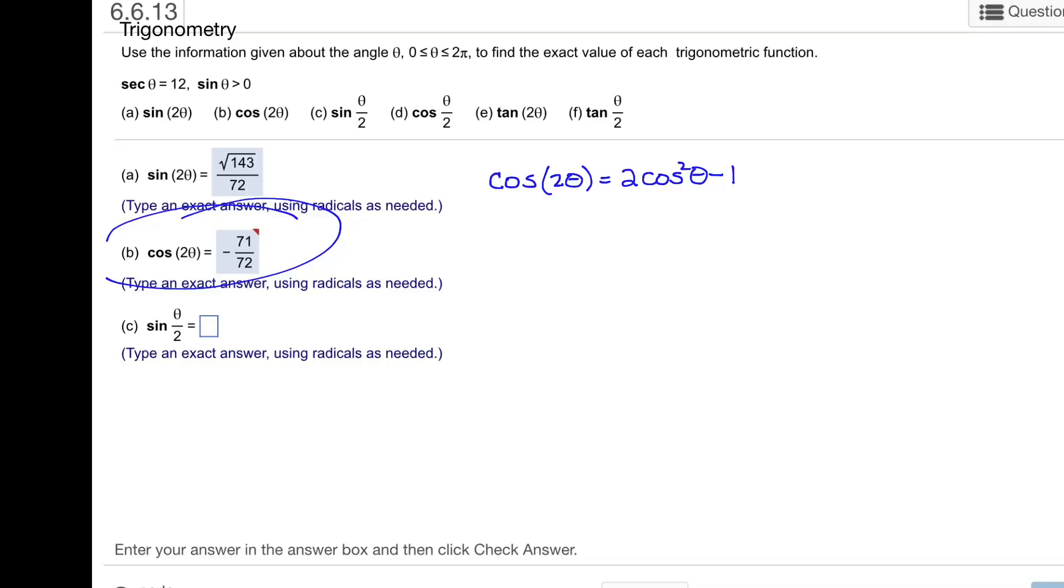The reason for this is because I already know that the secant of theta is 12, which makes the cosine of theta 1 over 12.